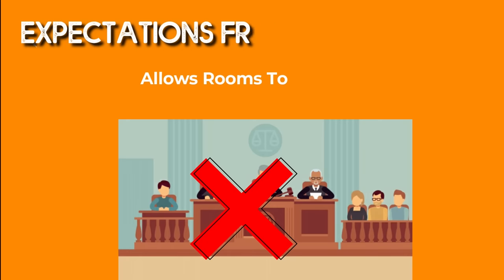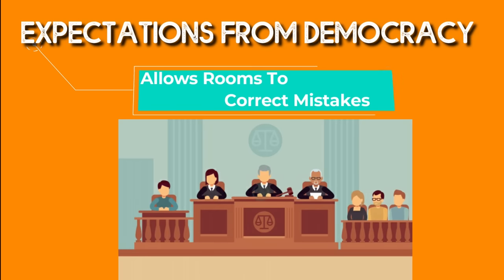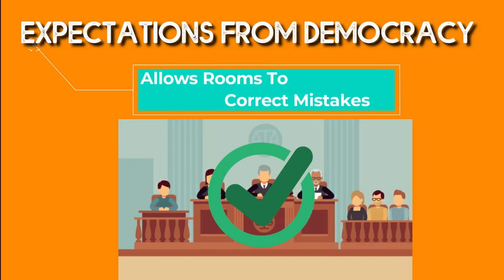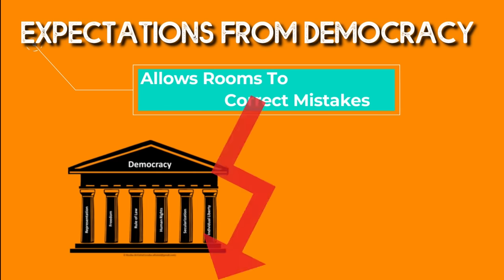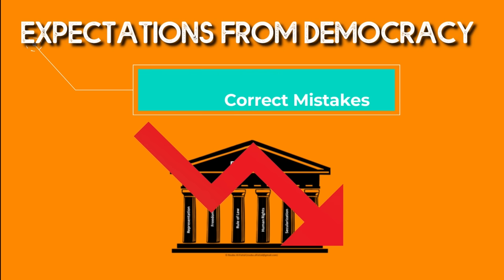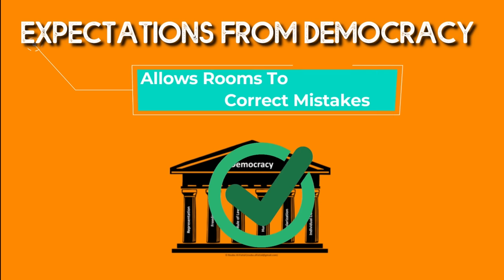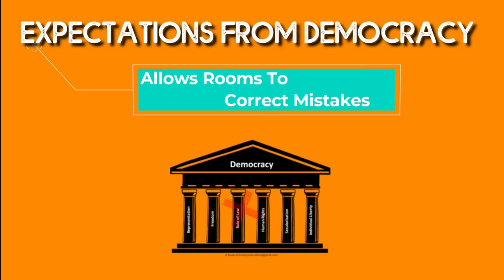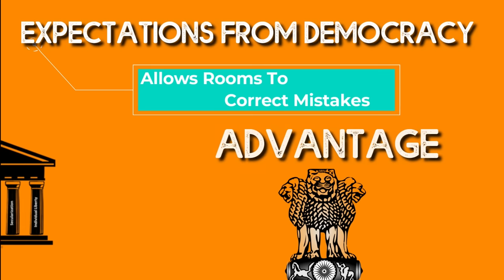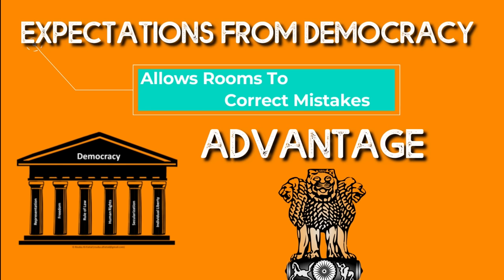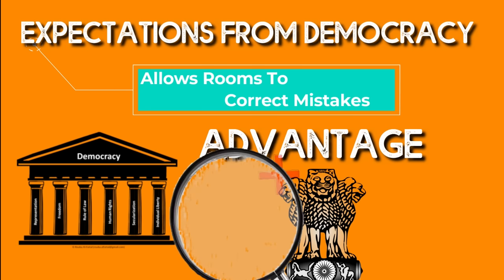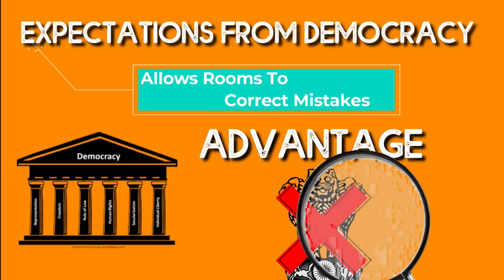Point number five: allows room to correct mistakes. In every system, nothing is totally perfect. No system is completely flawless. But democracy has an advantage — the government's mistakes can be corrected.